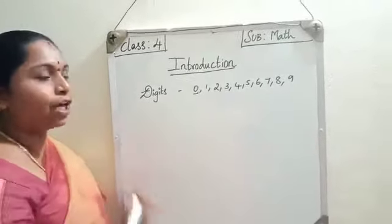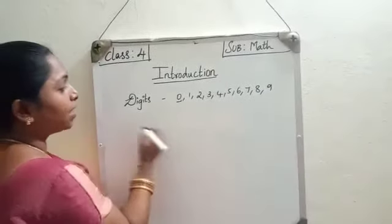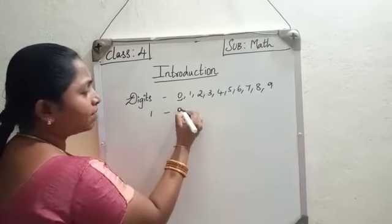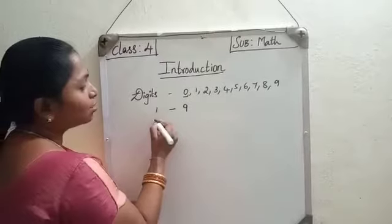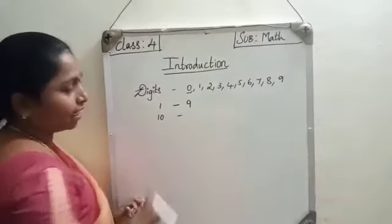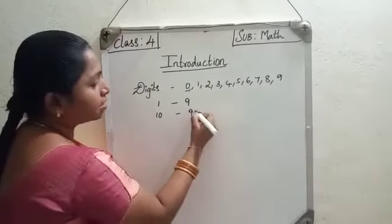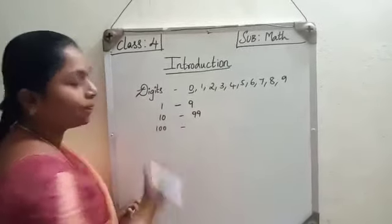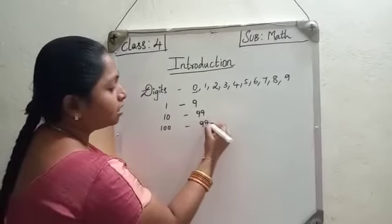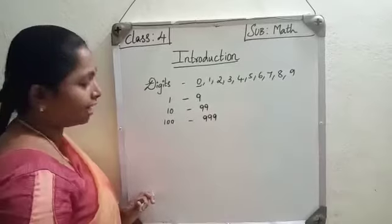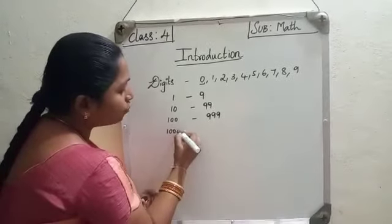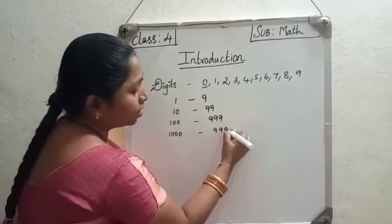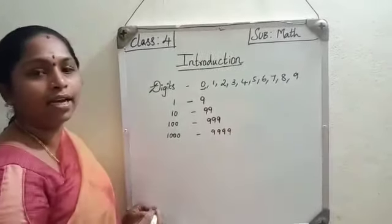I am just giving you a recap. What is the smallest 1-digit number? 1. What is the biggest 1-digit number? 9. What is the smallest 2-digit number? 10. What is the biggest 2-digit number? 99. What is the smallest 3-digit number? 100. What is the biggest 3-digit number? 999. What is the smallest 4-digit number? 1,000. And the biggest 4-digit number is 9,999.